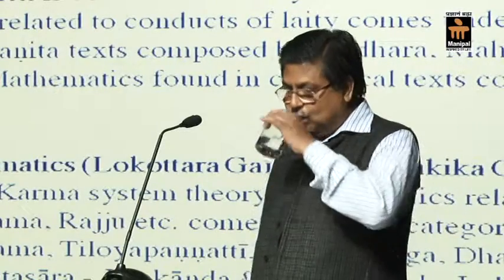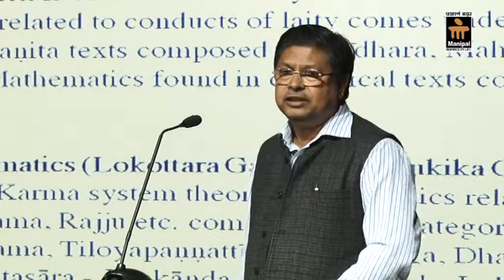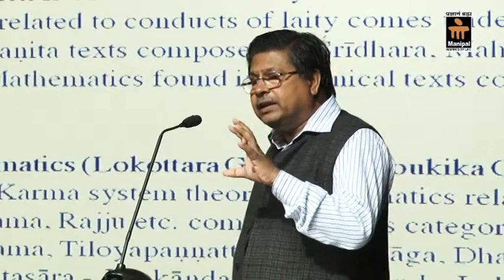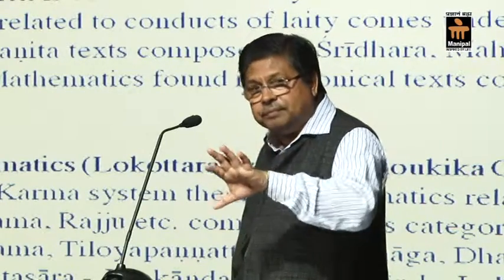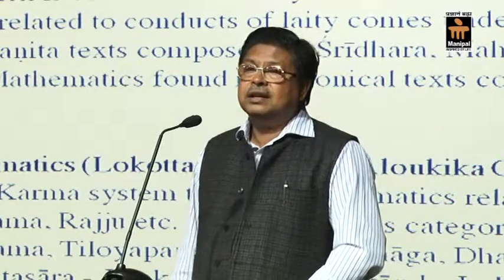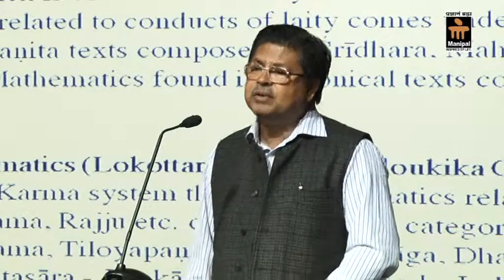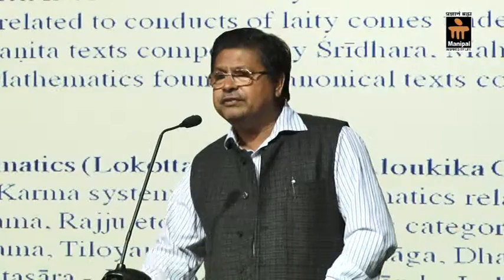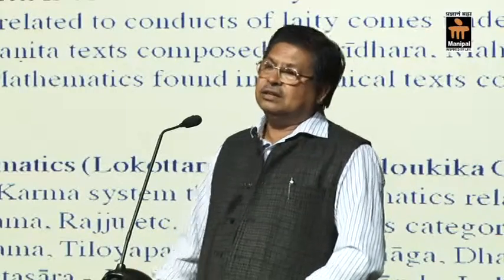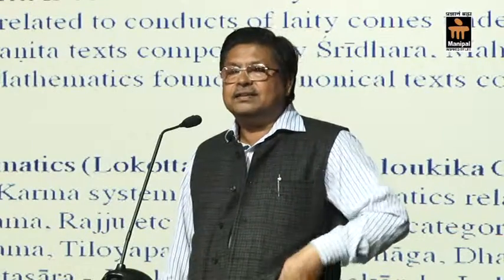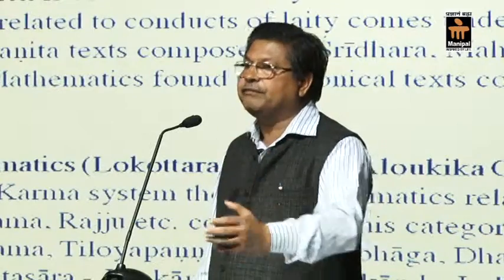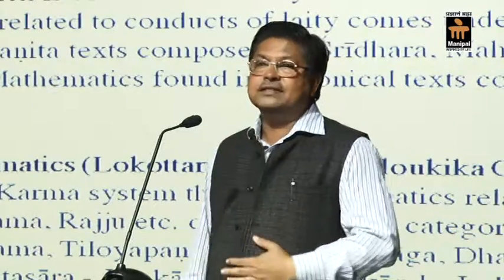Now we come to Aloki Ganit, which in modern terminology we can call para-worldly mathematics. The mathematical world was completely unknown to this para-worldly type of mathematics until two or three decades before. Modern number theory is somewhat different from the number theory available in Jain literature, and there is a lot of controversy and many unexplained things. People working in the field of Jain mathematics are unable to explain different phenomena of the number theory depicted in Jain literature.